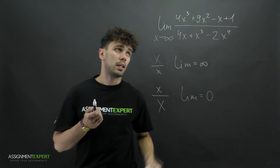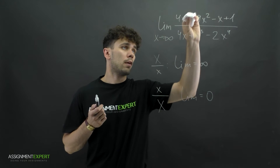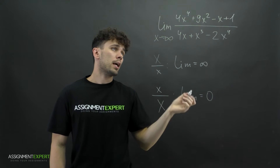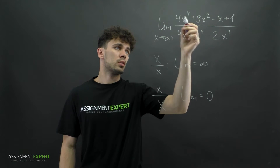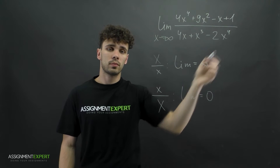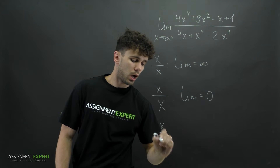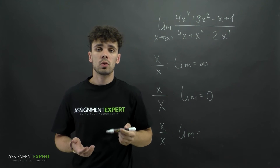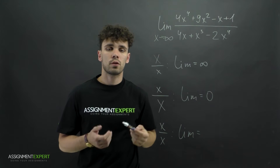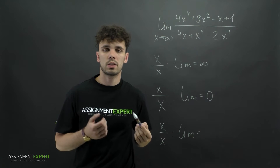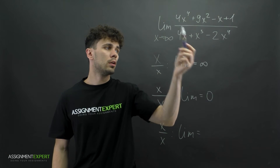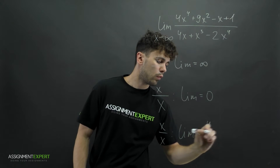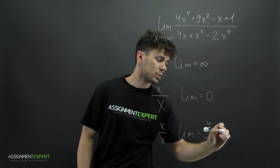And now the last case. If, for example, we have x raised to the fourth power over here, then we have equal highest powers — x raised to the fourth power. In this case, our limit is a constant number, and it is equal to the ratio of coefficients in front of the variables with these highest powers. In our case we have 4 and negative 2, so the limit equals 4 over negative 2, which equals negative 2.